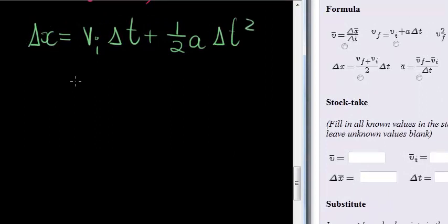The displacement is what we want to calculate. Initial velocity is given as 2 meters per second, but it was upward, so it's negative 2 meters per second.